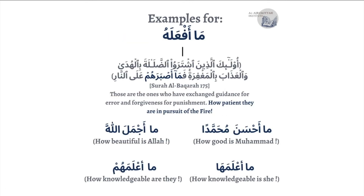Allah says in the Quran فَمَا أَصْبَرَهُمْ عَلَى النَّارِ, talking about people who hide the revelation. Allah says 'how patient they are in the pursuit of the fire.' أَصْبَرَ originally comes from the word صَبَرْ, meaning patience. To show that this person has patience in an amazing way, we put it on the pattern أَفْعَلَ, giving أَصْبَرَ. It is sort of a way that Allah is making ironic use of this construction.